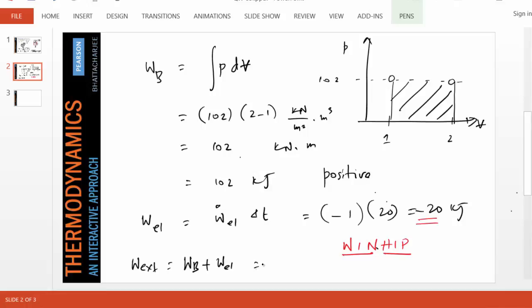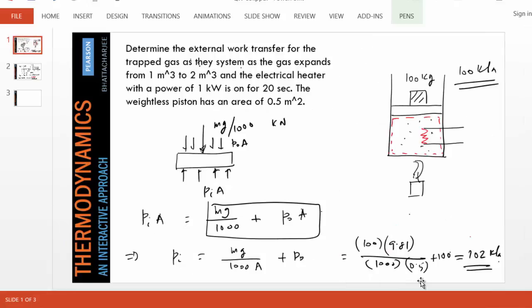Which is 102 minus 20, which is 82 kilojoules. That's our net work transfer, the answer for this problem. In other words, in 20 seconds the piston rises to double the volume, and the energy that is transferred through work outside is 82 kilojoules. So the system does 82 kilojoules of net work.